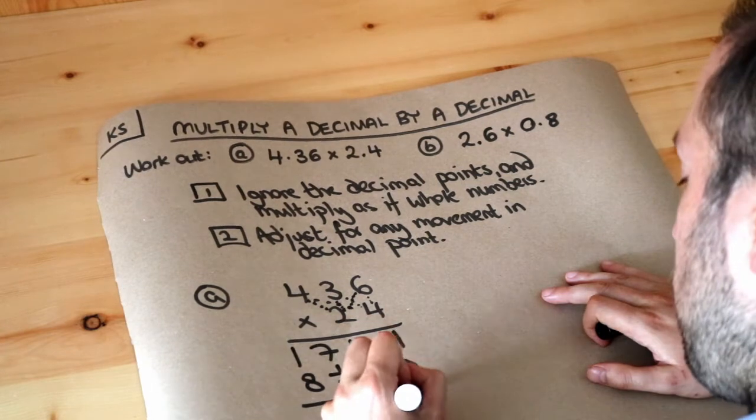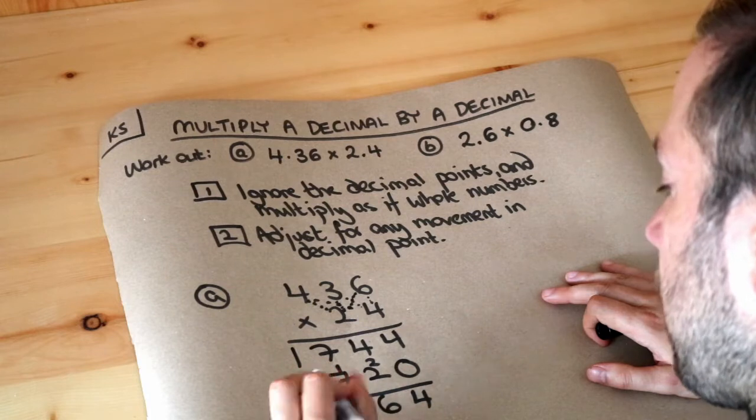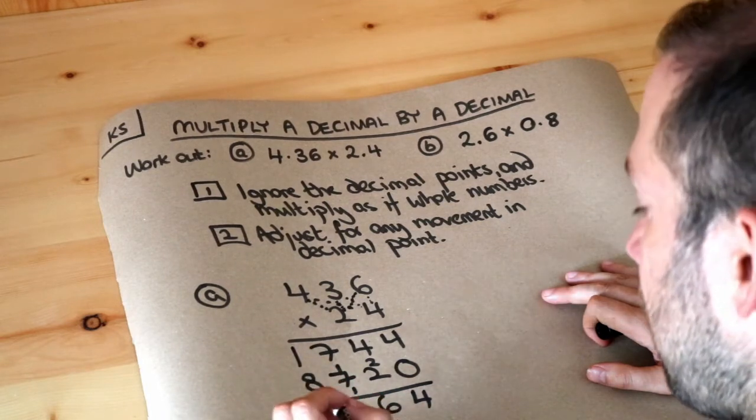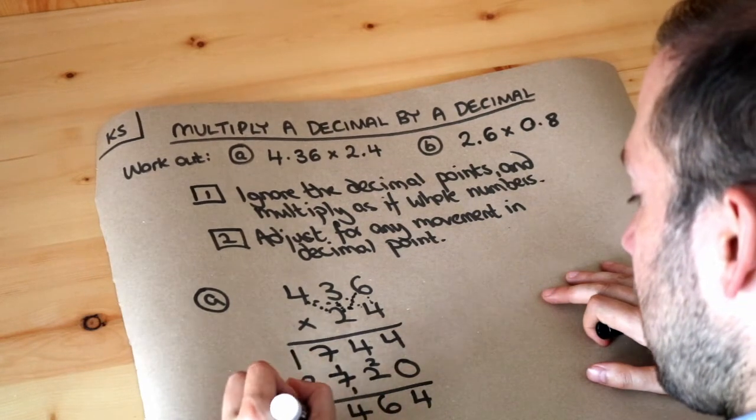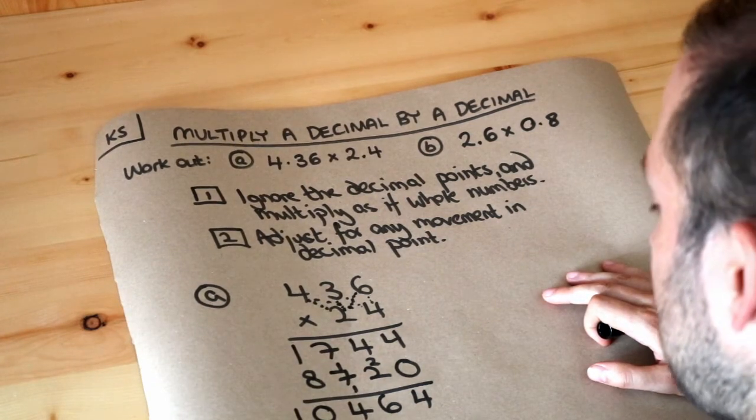So 4 plus 0 is 4, 4 plus 2 is 6, 7 plus 7 is 14, carry the 1, and 1 plus 8 is 9 plus the 1 is 10. So we've got 10,464.